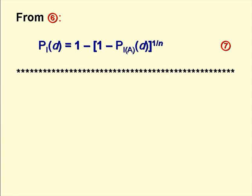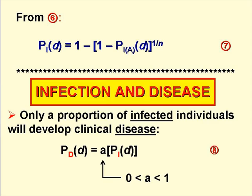We can express equation 6 in terms of PID, as shown on the slide, and this is equation 7. In normal casual speech, we often use the terms infection and disease to mean the same thing, but they are different. Not everyone who is infected will become ill. So the disease risk PDD is equal to a constant A times the infection risk PID – this is equation 8 – and A has a value somewhere between 0 and 1.